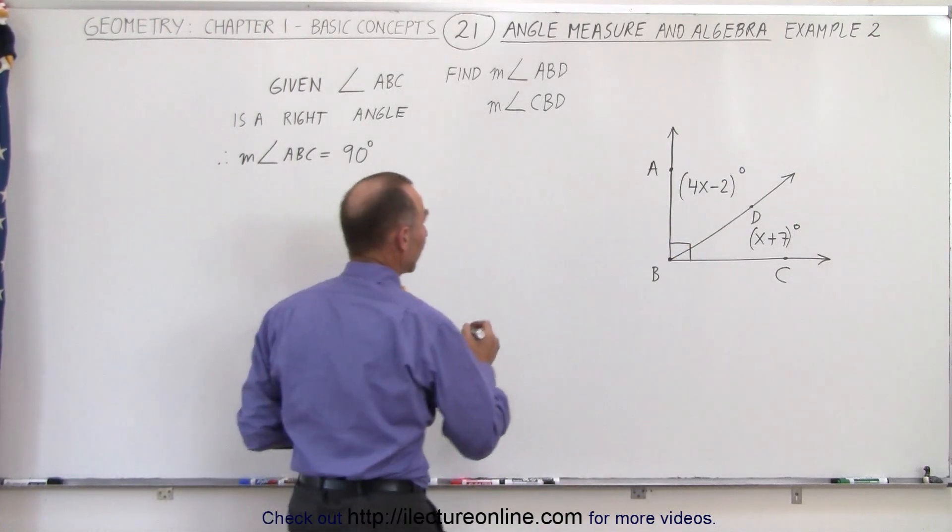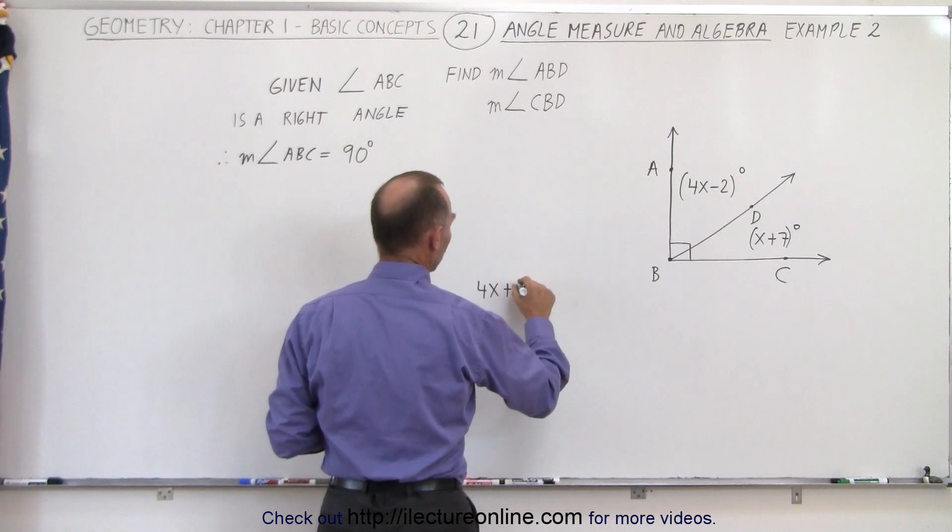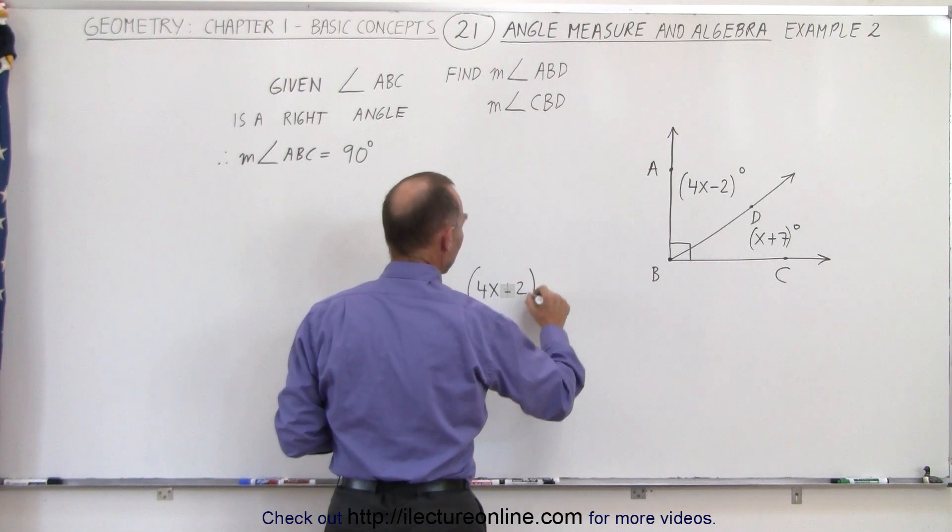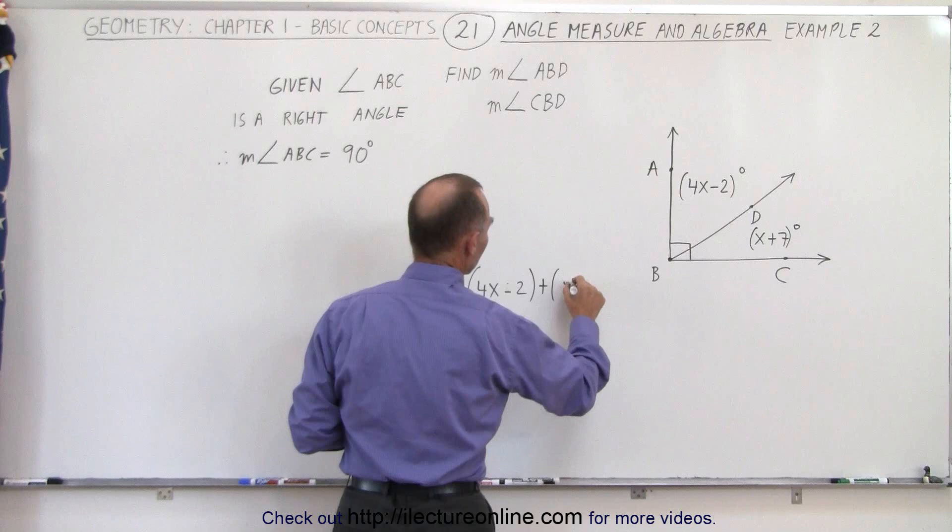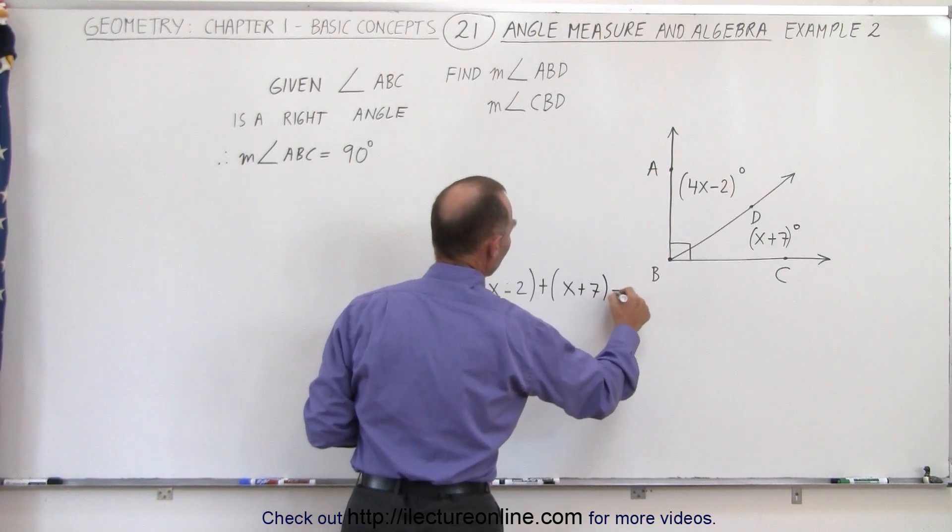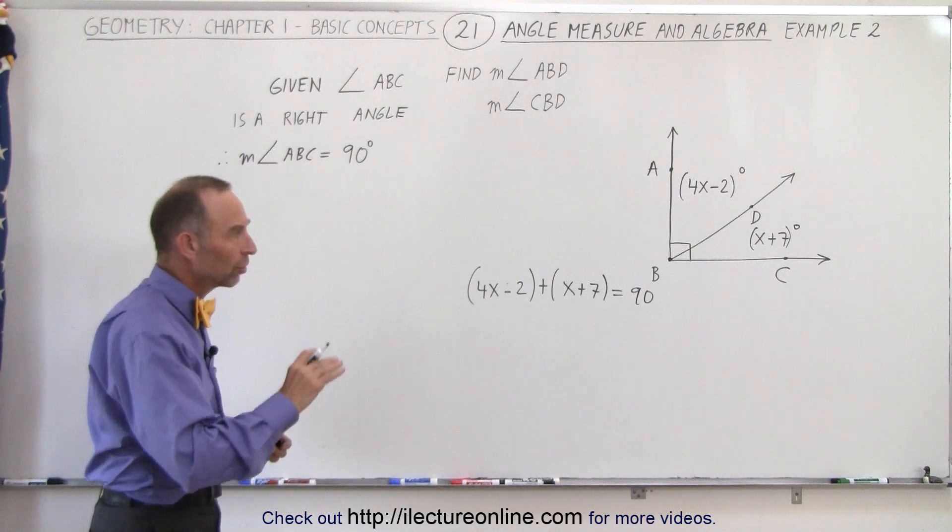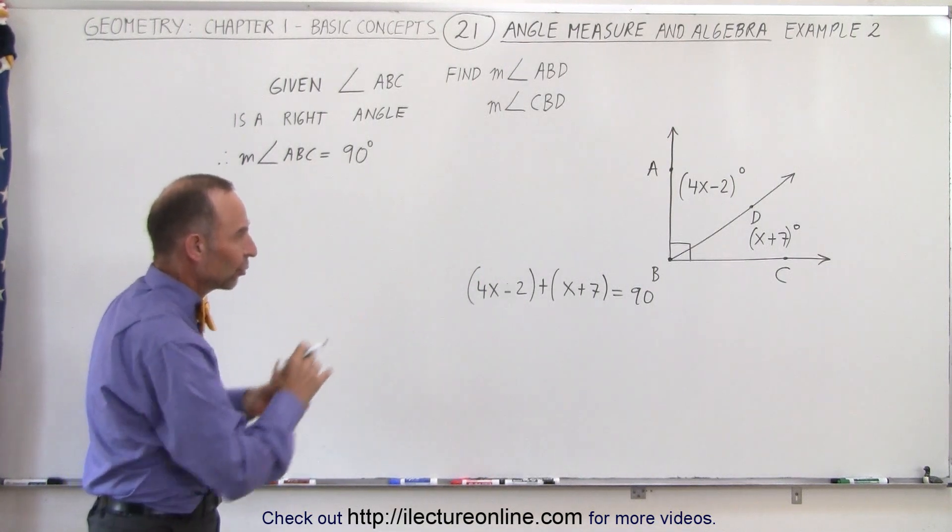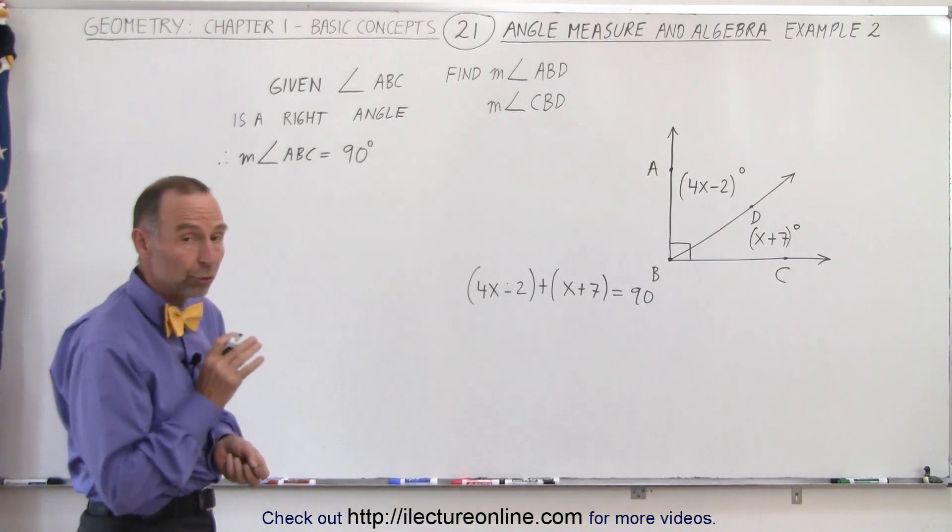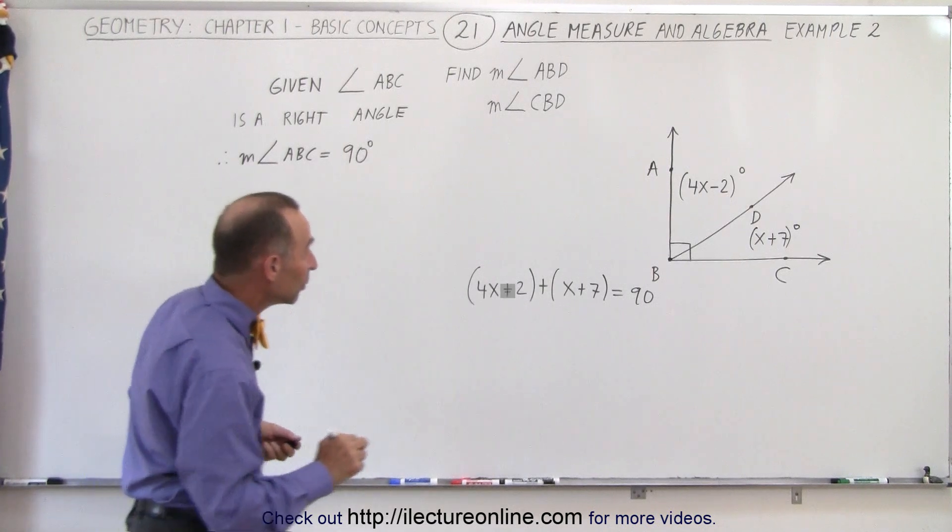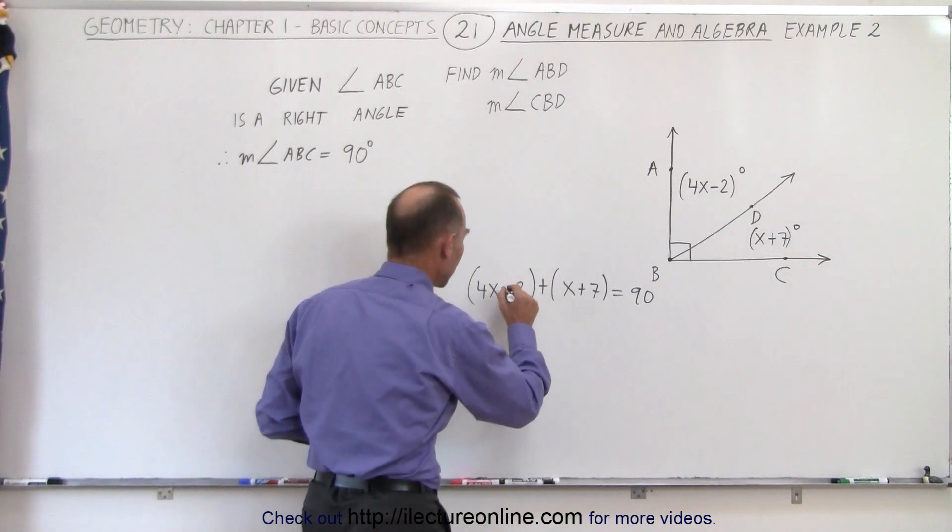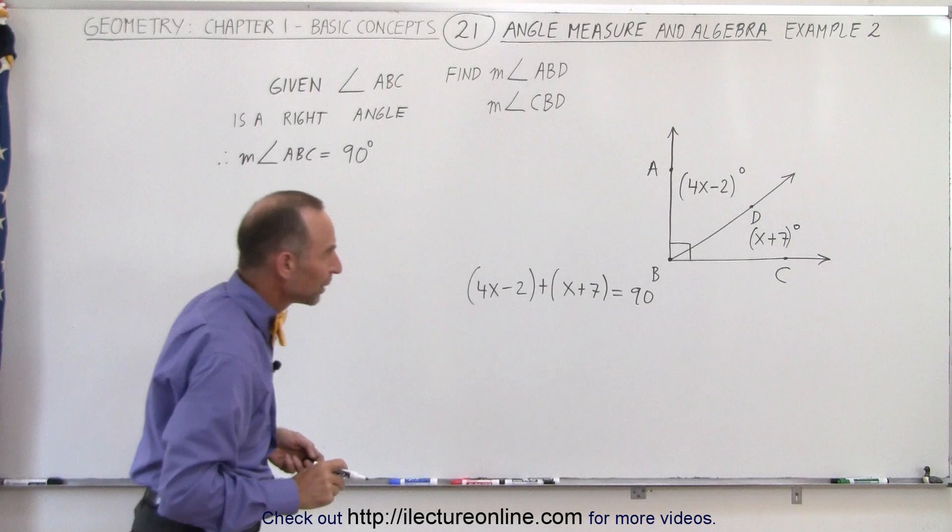Therefore, we can say that 4x plus 2 added to x plus 7 must add up to 90. Here I simply ignored the degrees because it makes it easier to work out the problem. I made a mistake here—this should be 4x minus 2.